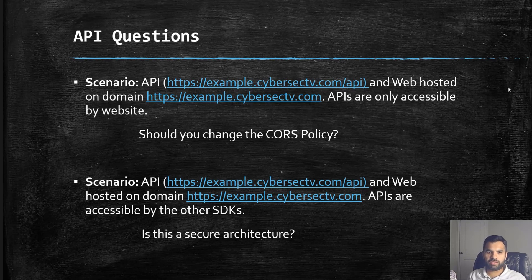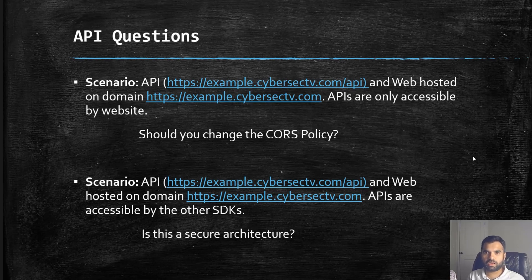Now a second scenario: the APIs and website are hosted the same as above, but now the APIs are also accessible by other SDKs — other websites, third-party libraries, for example Google APIs, CloudFront APIs, Google Maps, etc. So these APIs are also accessible by other domains and SDKs. How do you define your CORS architecture? What is the secure architecture here? This scenario is a bit tricky.